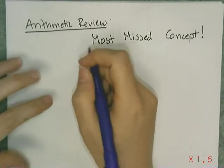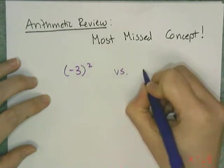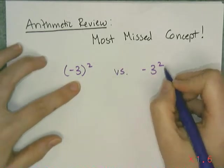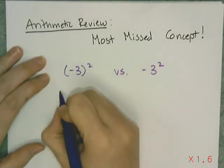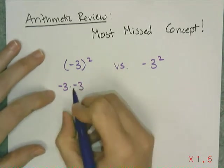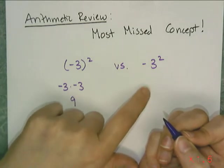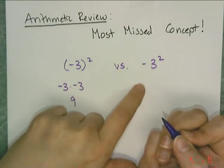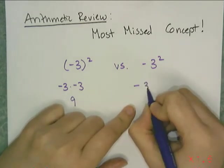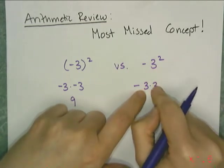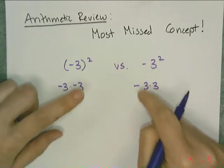And it can be best seen in a very basic example, which is what is the difference between these two quantities. Well, this thing means I'm taking the number negative three and I'm squaring it. So it's negative three times negative three, which is a positive nine. This thing here is not saying take negative three and square it. This is saying take the opposite of three squared. So I only have one negative sign and then I only expand the three out. So it's like negative three times three, which is negative nine. Big difference.